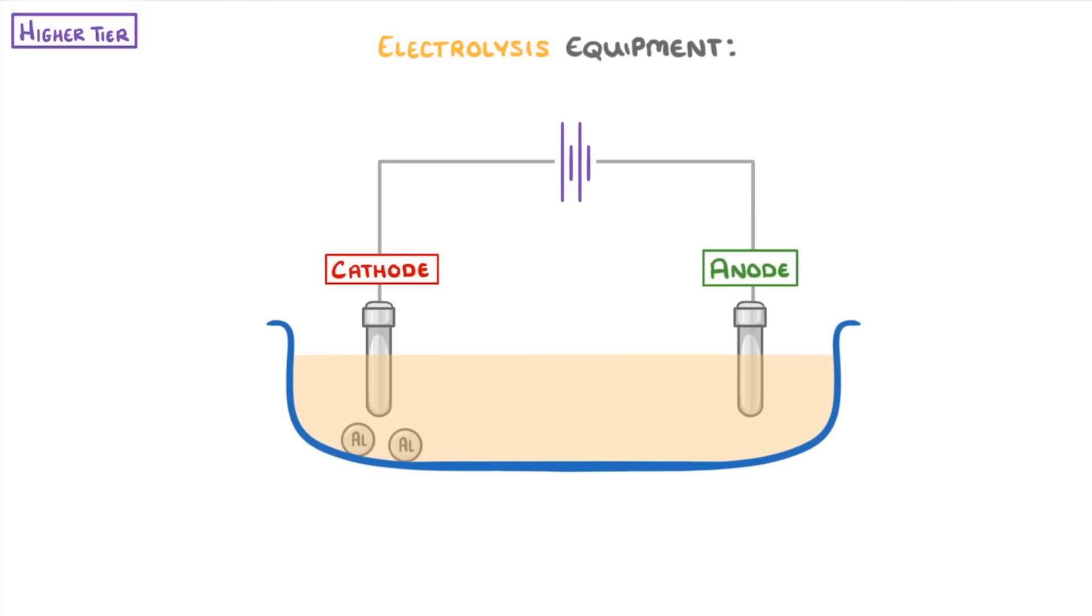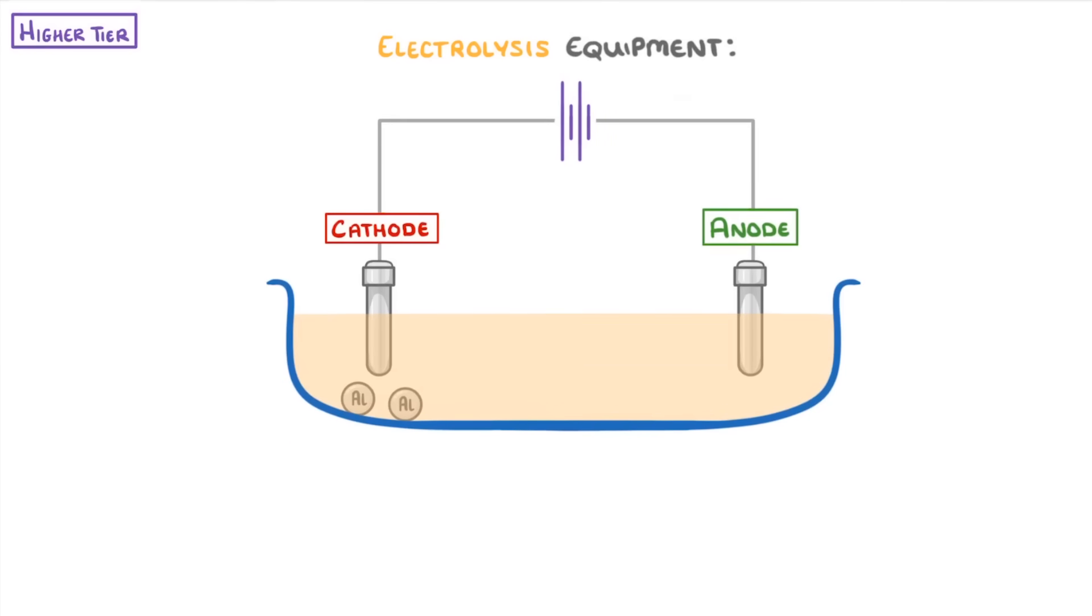Now that we've seen what's happening at each electrode, we can work out the exact equations that describe the electrolysis process. We do this using two half equations, one describing the reaction at each electrode.